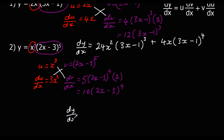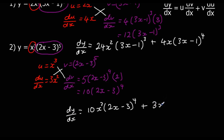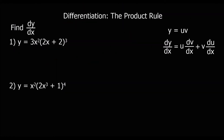So dy/dx — we do u times dv/dx plus v times du/dx. That gives us 10x³(2x−3)⁴ plus 3x²(2x−3)⁵, and there's our answer. Okay, now two for you to try. You've got two functions multiplied together, so differentiate them both, then do u·(dv/dx) plus v·(du/dx).